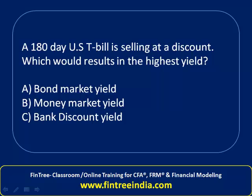A 188-day US T-bill is selling at a discount, which would result in the highest yield. In corporate finance, we've learned a method — an analogy of three mistakes — that we always start with holding period yield.